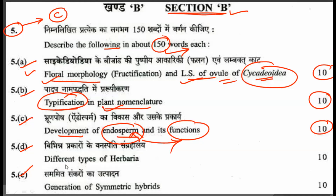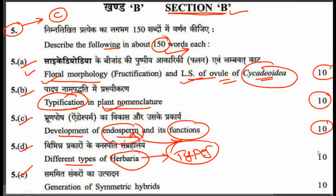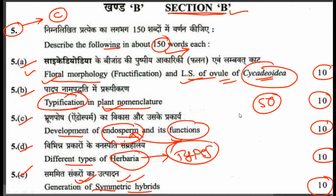The next sub-question, which is again a very easy question, asks you to describe the different types of herbaria — you just have to put forward the types of herbaria, and for this you will get 10 marks. The last sub-question is the generation of somatic hybrids — you have to describe the generation of somatic hybrids, and for that you will get 10 marks. This compulsory question has a 50-mark weightage. Questions like the development of endosperm and its function will give you full marks because these are very easy questions.